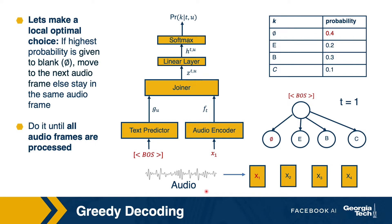Let's say we have a test audio which has four audio frames in it, and we want to find out what is the transcript corresponding to that audio. When we start the decoding, our text history is going to be beginning of the sentence. We pass this text history and get the text embedding. We take the audio features corresponding to frame one, pass them through the audio encoder to get the audio embedding, then pass the audio embedding and text embedding to the joiner, through the linear layer and softmax, and get the probability distribution over our letters and a blank symbol.